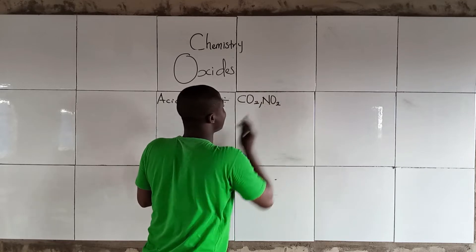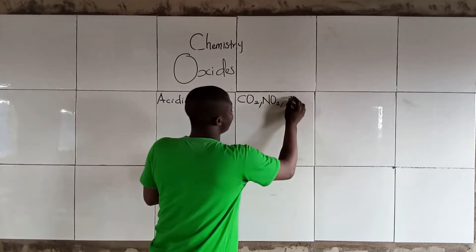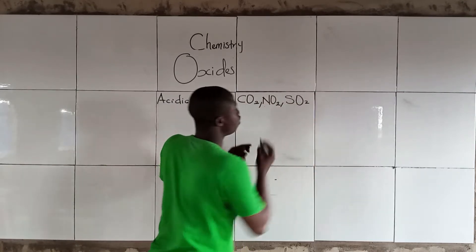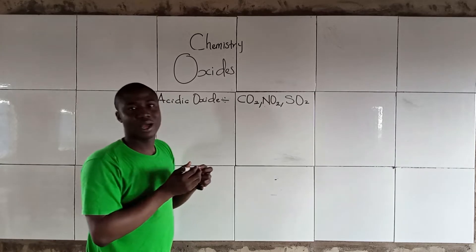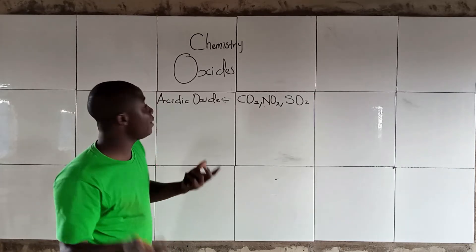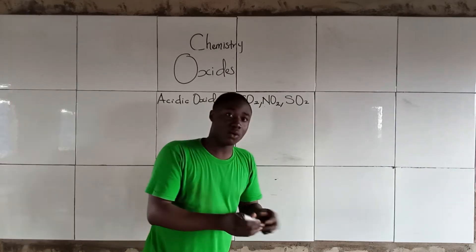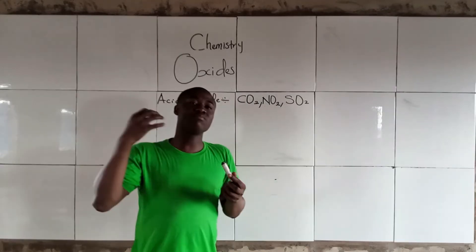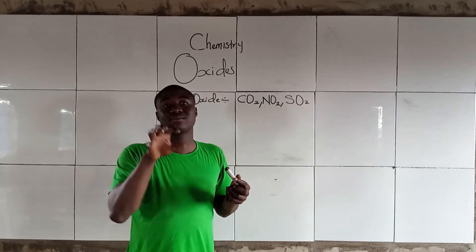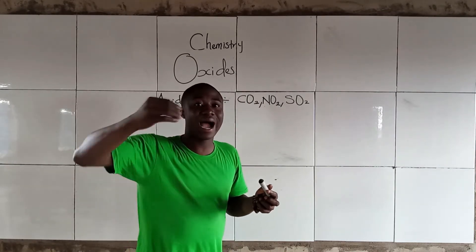NO2 is another Acid Oxide. SO2 is another Acid Oxide. Talking about Acid Oxides makes us understand the concept of Acid Anhydrides.